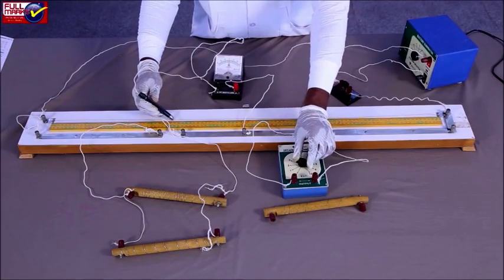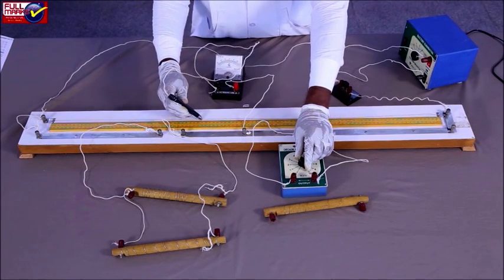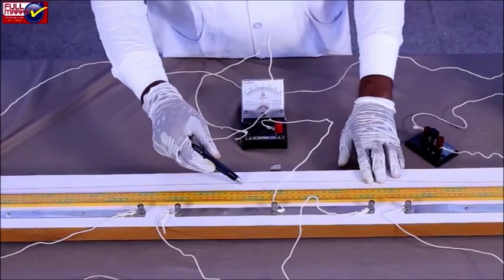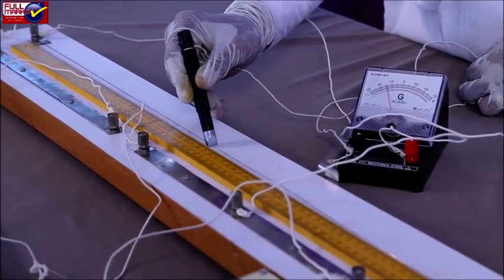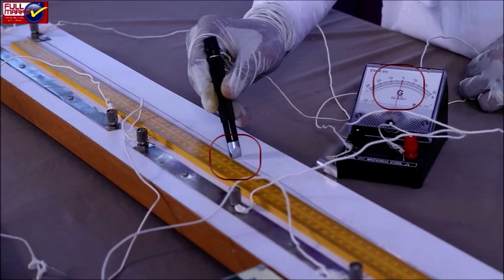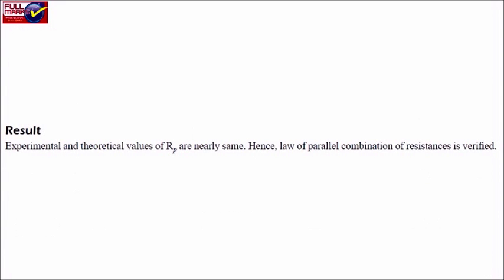In the gap for unknown resistance, attach the given resistors R1 and R2 in parallel combination. By sliding the galvanometer jockey, calculate the balancing length for the parallel combination by following the same steps of Experiment 1.2. Repeat these steps for at least three times and calculate the mean resistance. Result: the experimental and theoretical values of Rp are nearly the same; hence, the law of parallel combination of resistance is verified.